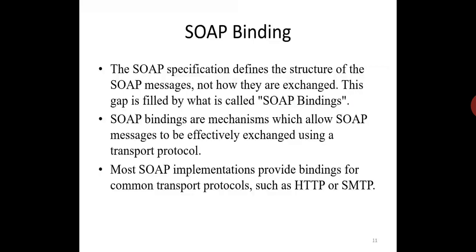SOAP bindings are mechanisms which allow SOAP messages to be effectively exchanged using a transport protocol. Most SOAP implementations provide bindings for common transport protocols such as HTTP or SMTP. A SOAP HTTP request specifies at least two headers: content type and content length.